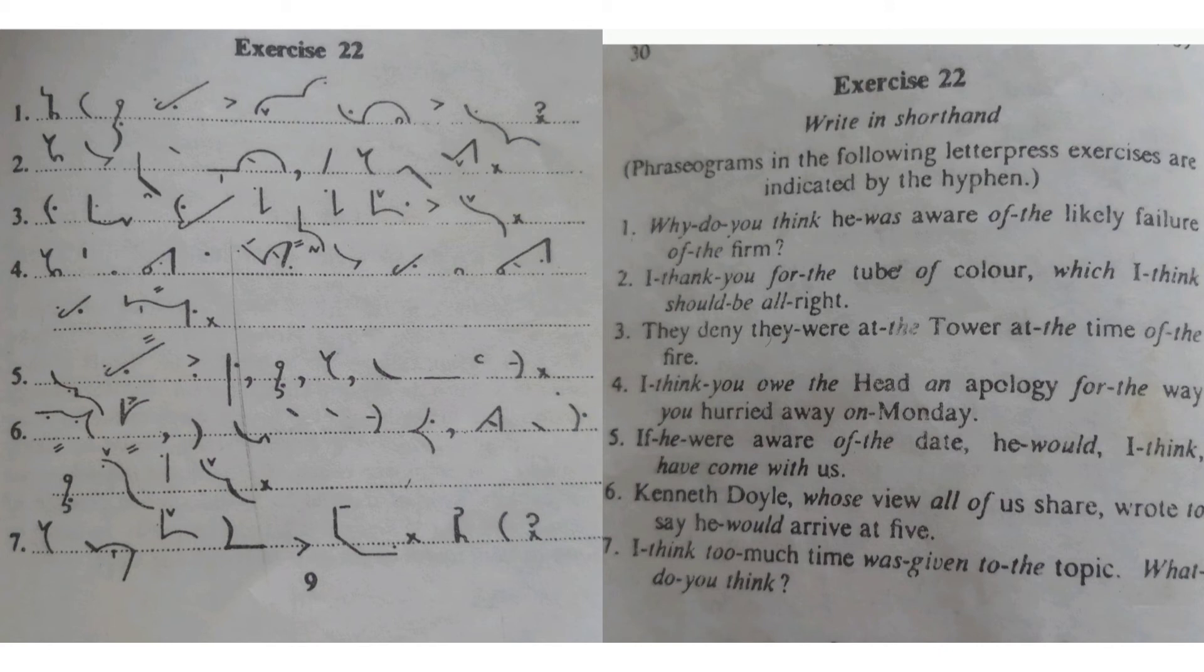Sixth line. Kenneth Doyle, whose view all of us share, wrote to say he would arrive at five. Full stop.